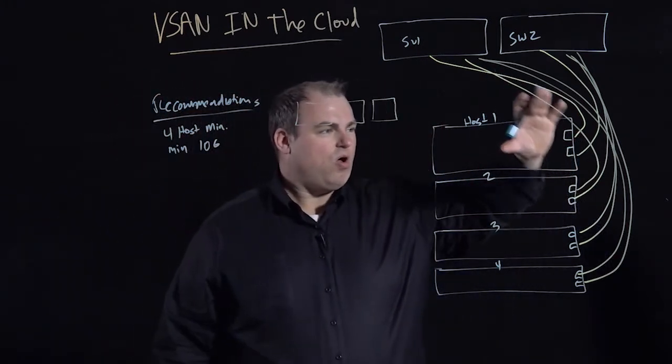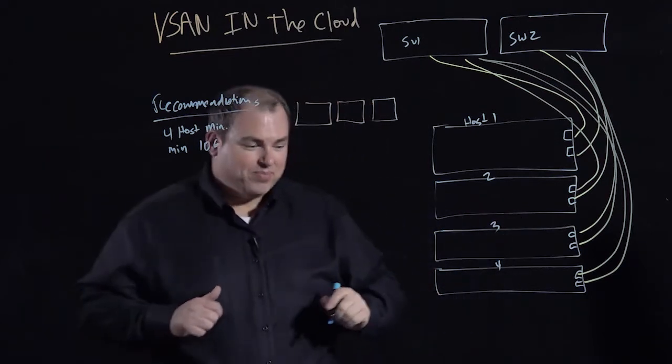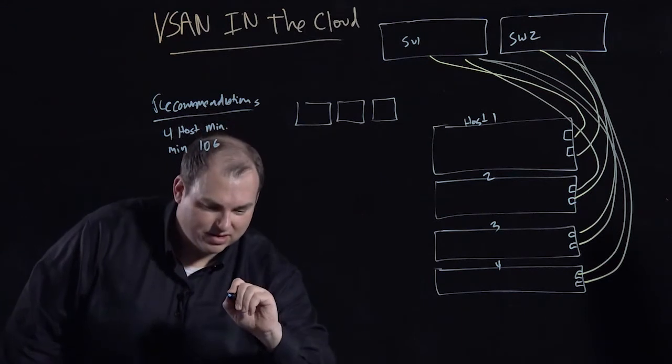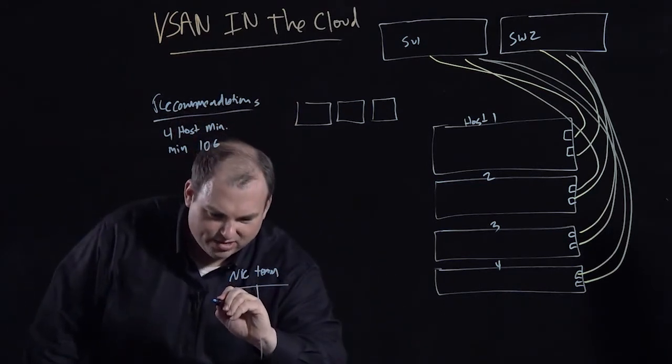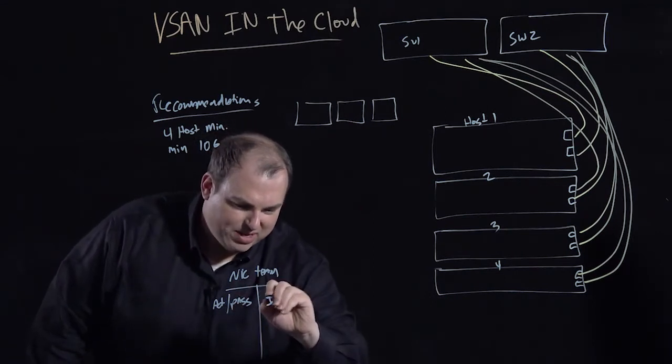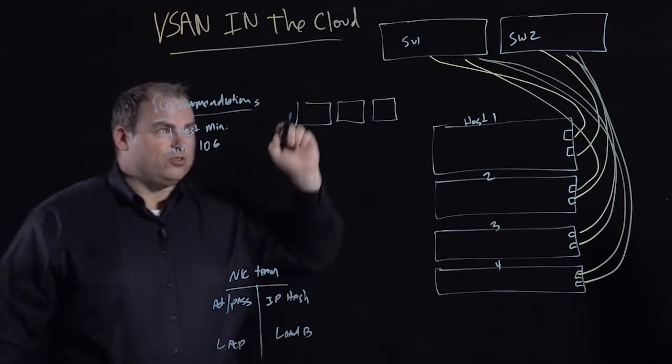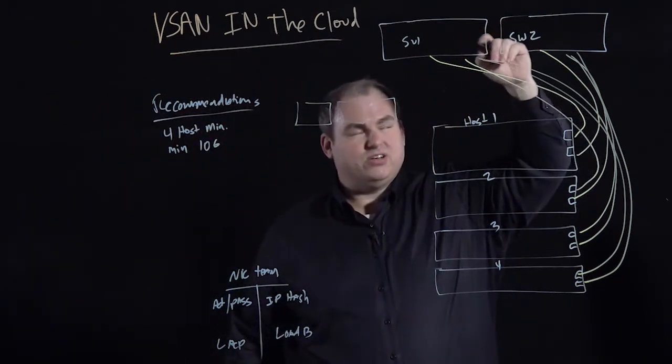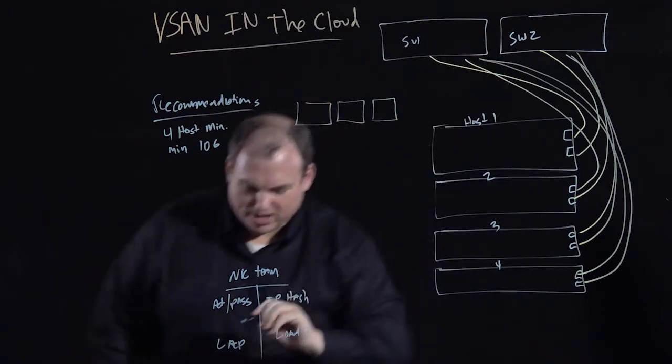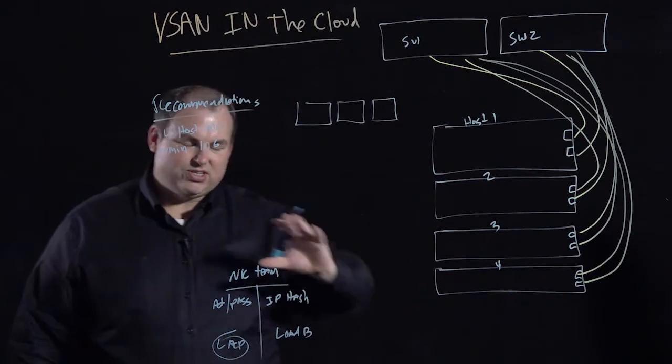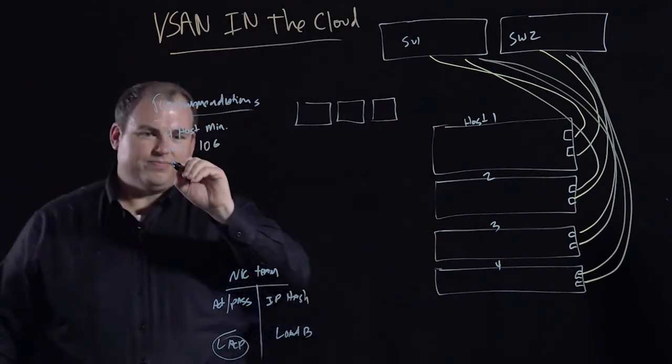So now that we've chosen this all-flash 10 gig network, we've got to set up a couple things. One of the things we want to set up is NIC teaming. We have a couple of options for NIC teaming. We have active passive, which you're probably all familiar with. We have IP hash, which I'm sure most of you are. We have load-based, which is fairly new. And we have LACP. If your switches support it, meaning they're connected or the switch software supports LACP between leaf switches, I absolutely recommend LACP.